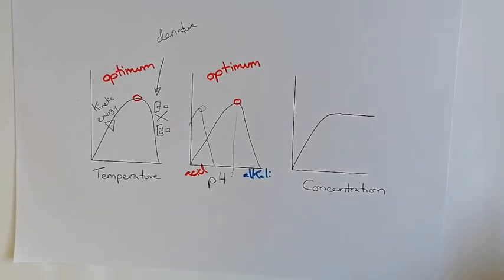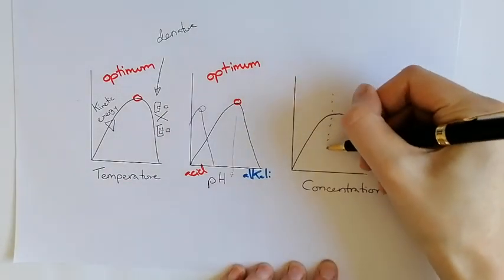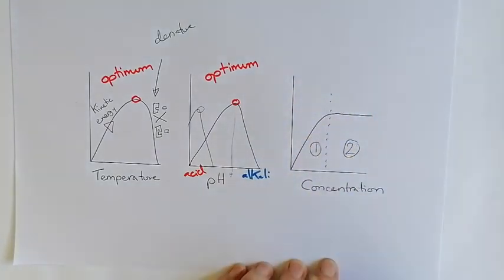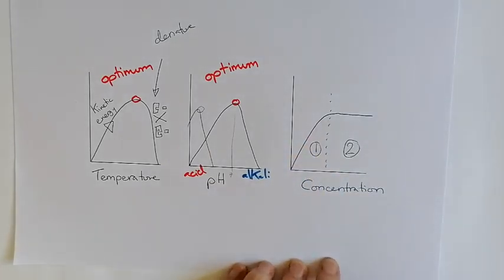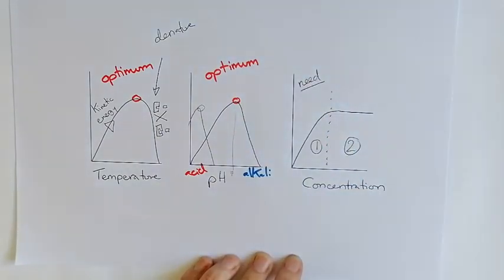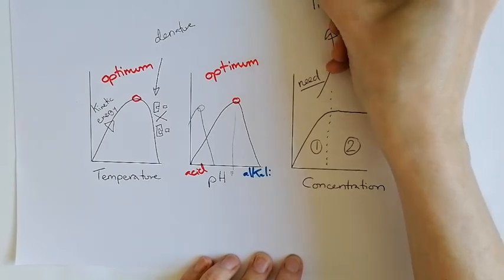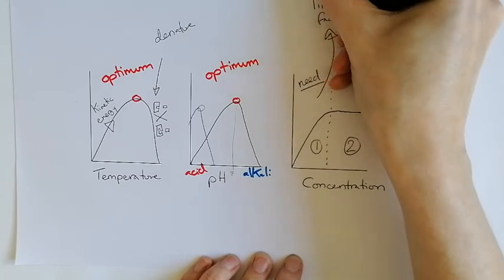The final graph that you need to know about is concentration. Concentration is a little bit more complicated. But as a general rule, you would split this graph into two sections. In the first section, the more of whatever this is, the better the rate of reaction. So this is what we need. If we were talking about this in terms of photosynthesis, we would talk about this in terms of something called a limiting factor. So this is the thing that we need in order to go faster or to go better.